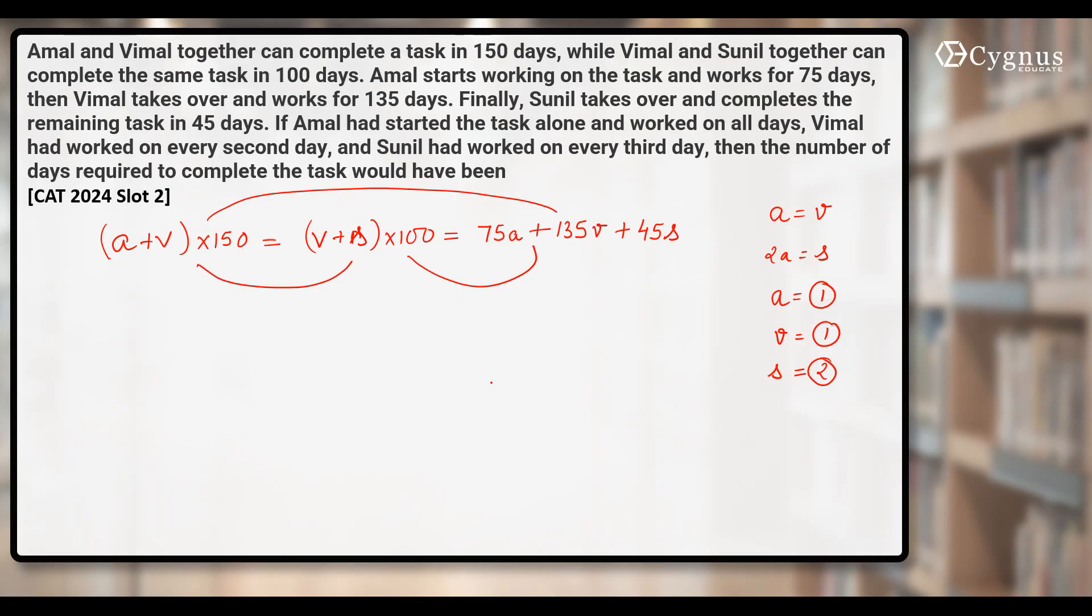But finally, they're not working together. Amal will be working every day. Vimal had worked on every second day and Sunil had worked on every third day. Let's see how they are working. First day, Amal will be working alone. That means he'll do one unit. Second day, Amal and who's working on the alternate days. It's given that Vimal had worked on every second day. That means on second day, Amal and Vimal will be working together. So they'll do how much work? One plus one. That is two units.